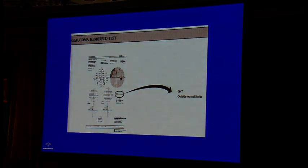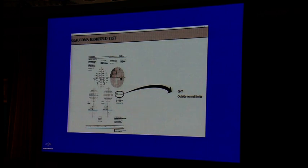The glaucoma hemifield test exploits the fact that visual field sensitivity across the horizontal meridian, especially nasally, is asymmetrically affected in glaucoma. It compares sets of visual field points across the horizontal meridian in locations where glaucomatous damage commonly occurs. When the glaucoma hemifield test is abnormal, it is likely that the defect is due to glaucoma.